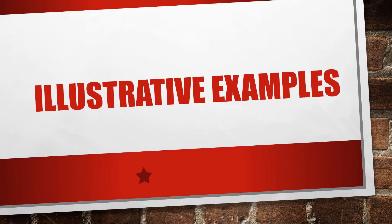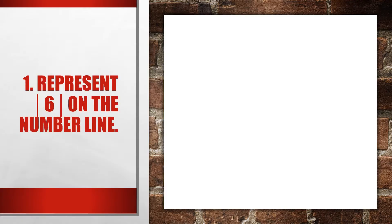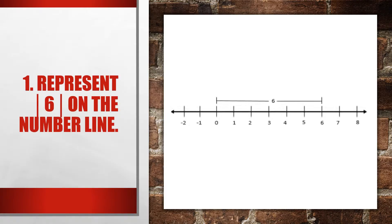Let us have our illustrative examples. Represent the absolute value of 6 on the number line. We have a horizontal number line. We're talking about the distance of 6 away from zero, going to the right. But when you talk about absolute value, it disregards direction. The absolute value of 6 is equal to 6. Six is 6 units away from zero.